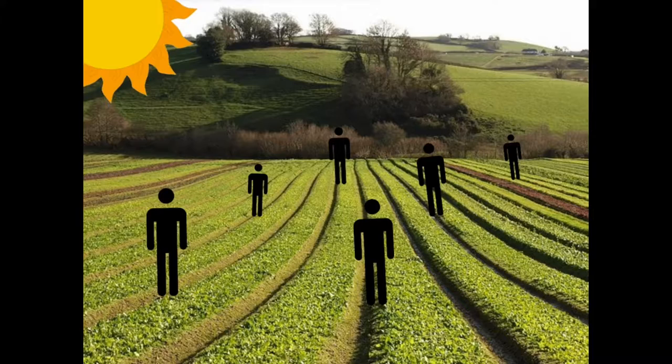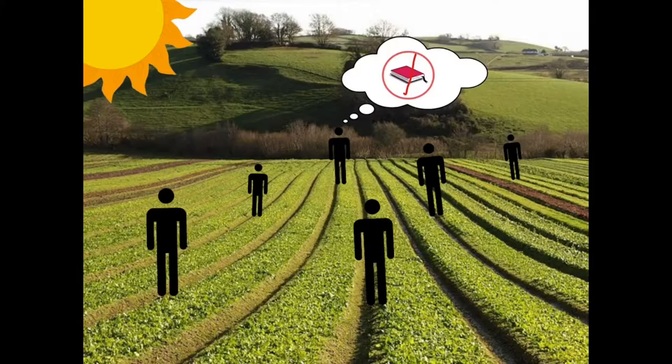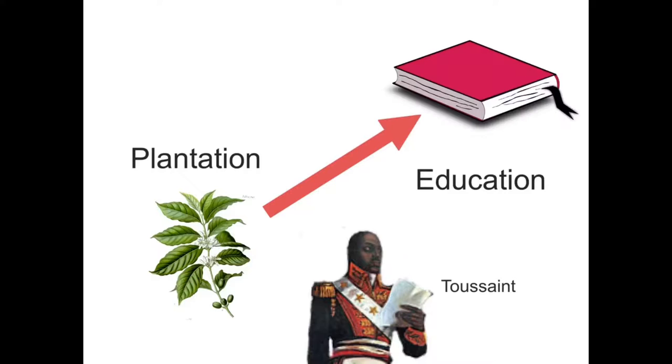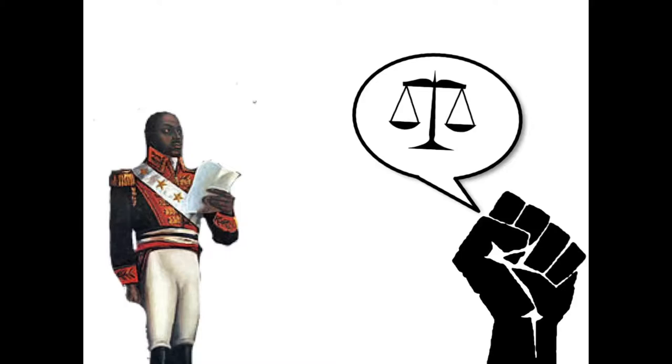The revolution started when the slaves realized they were unhappy with the life they were living and didn't think it was fair. Toussaint used to be a planter, but then he was able to get an education. With his education, he realized he wanted to help people of color fight for their rights. The ball rolling down the ramp symbolizes Toussaint helping people of color fight for what's right and leading them in the revolution.